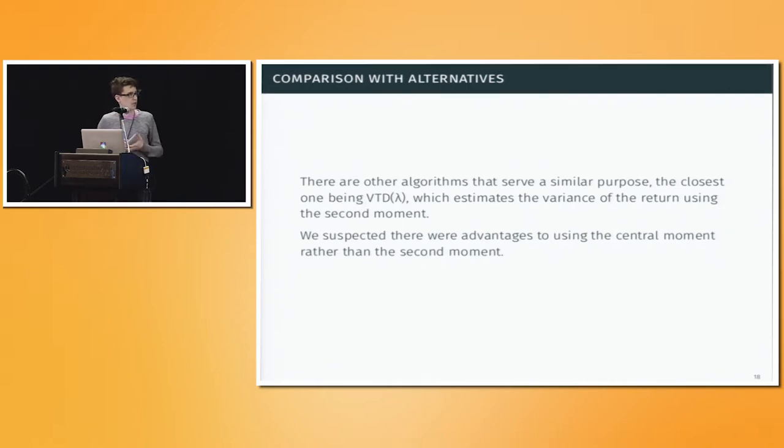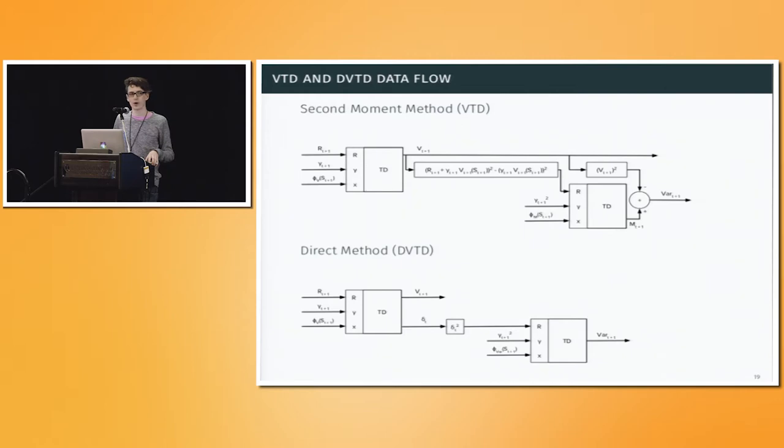As I mentioned before, there are alternatives. You might want to use this if you're only interested in the variance, and you're not interested in doing distributional RL. This is a very simple algorithm, very easy to implement, hard to make mistakes with. So, if you're already learning the value function using a TD method, you might as well use this in order to learn the variance as well. We suspected that there would be advantages, given that we've noted problems with VTD, and, naturally, the second moment is going to be a much huger target. So you can expect that the stability will be kind of off. It will be harder to learn.